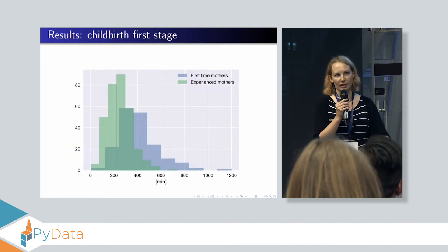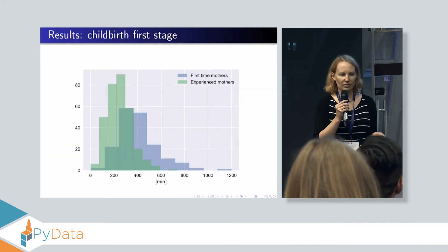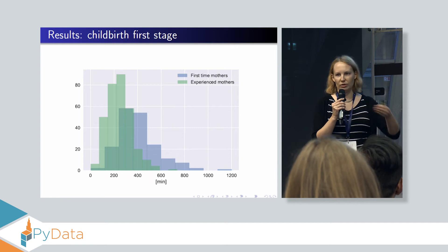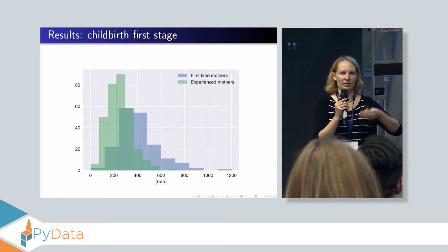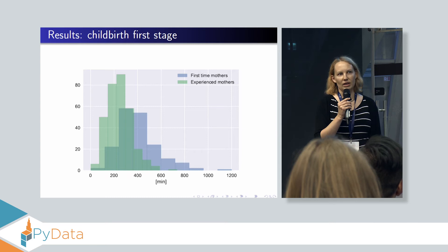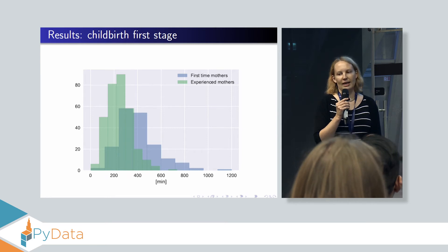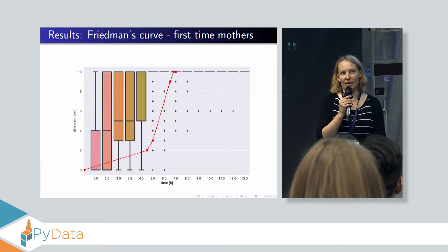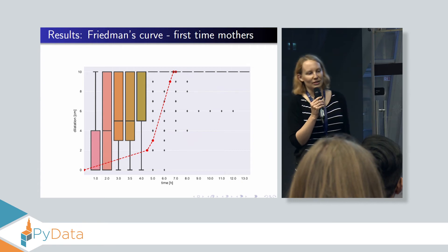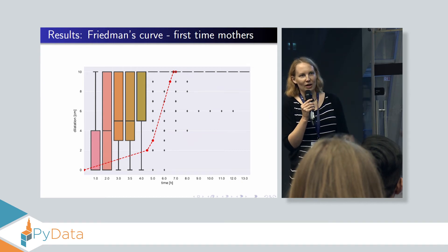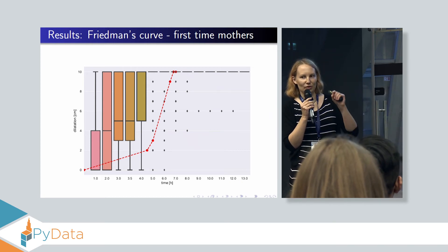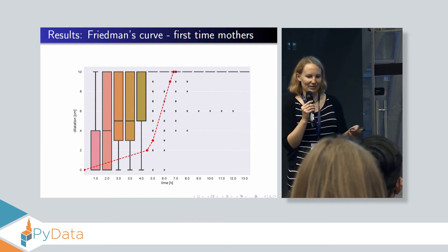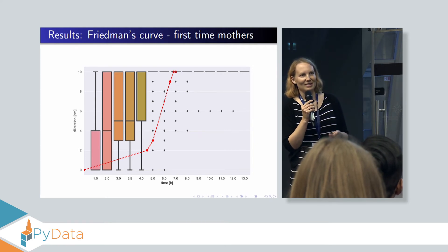And what do we want to study? We want to calculate things like how long it should take for the first stage of labor. We can see that there is a definite difference between first-time mothers and experienced mothers. And I made something like this Friedman curve myself. This red point is the original curve that I think is wrong, and these bars represent our data.